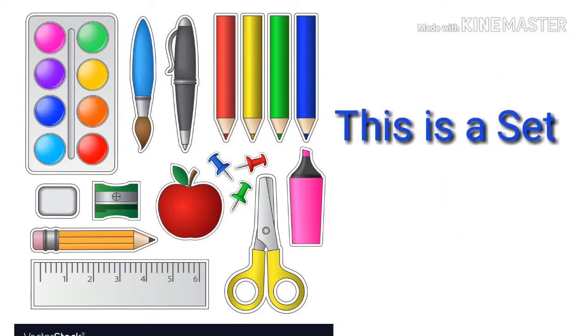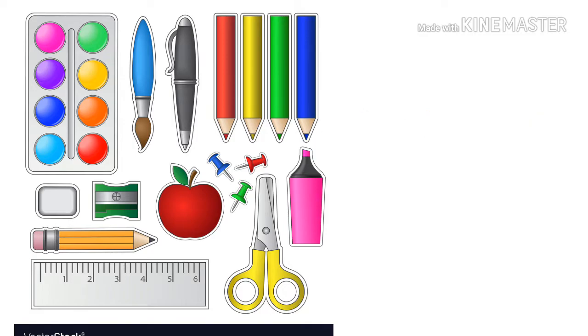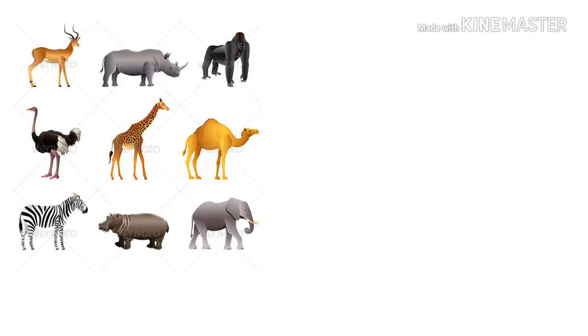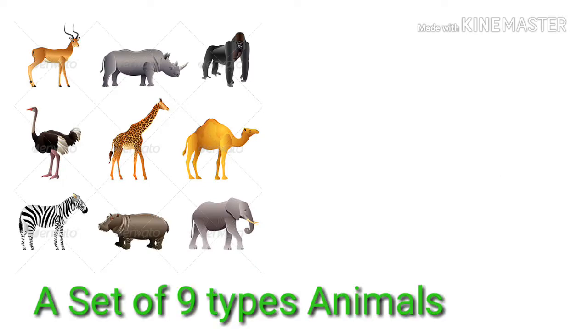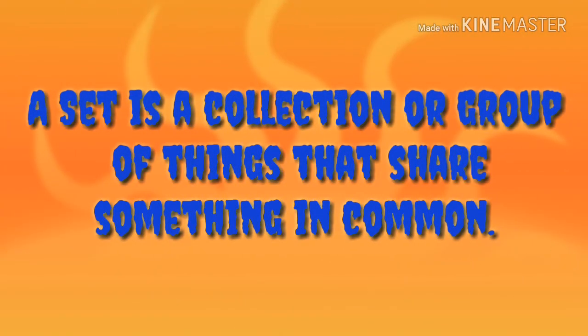Here is an example of a set. This is a set — a set of nine types of animals. A set is a collection or group of things that share something in common.